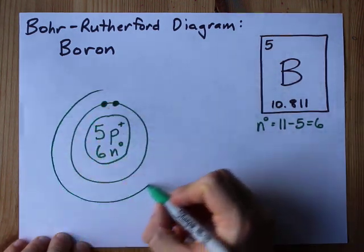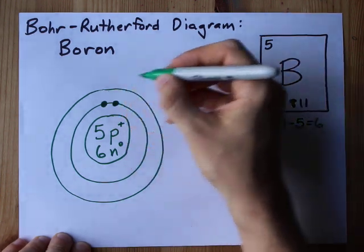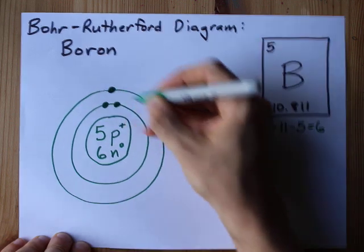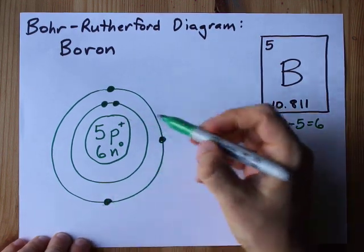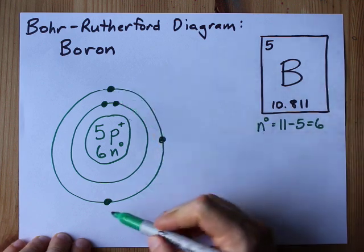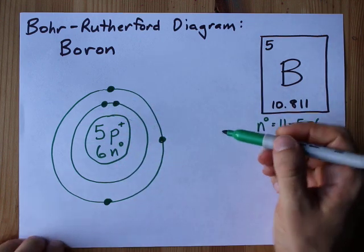In the second shell, you're allowed to fit up to 8. We only need 3 more, so I'm going to do 1, 2, 3. A lot of teachers want you to separate them out, 1, 2, 3. Four separates before you start pairing them up like I did in the first shell there.